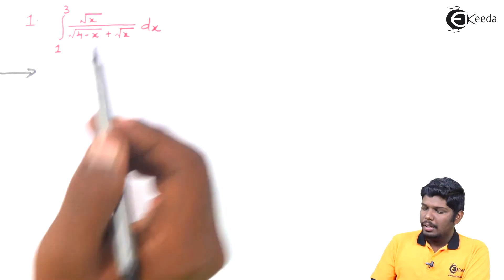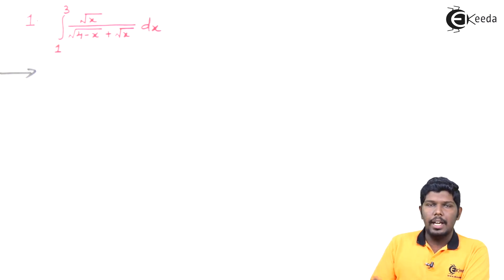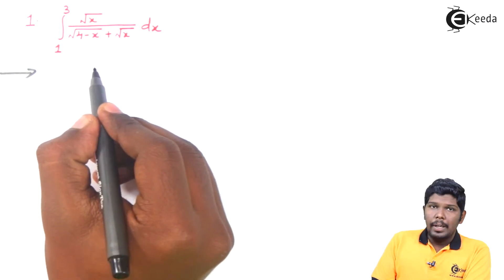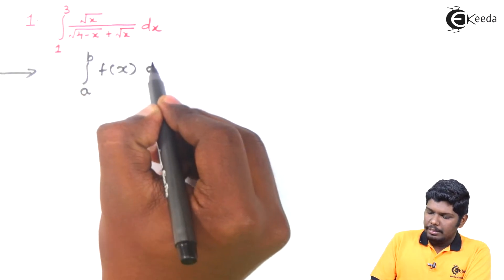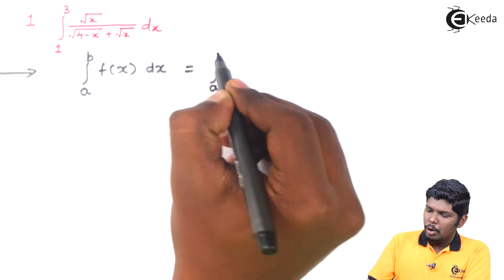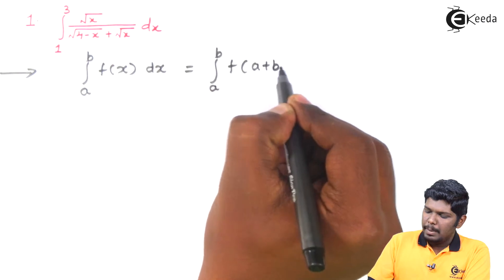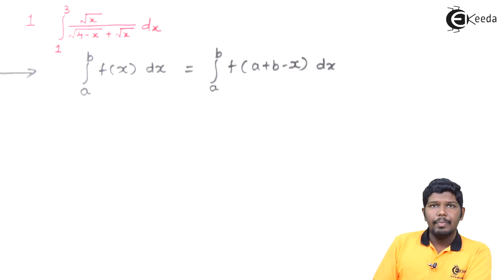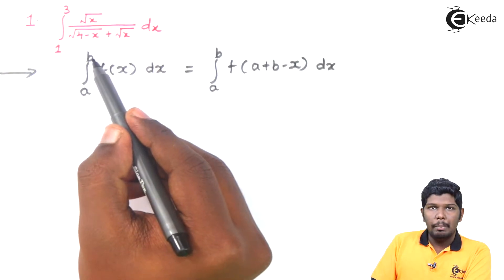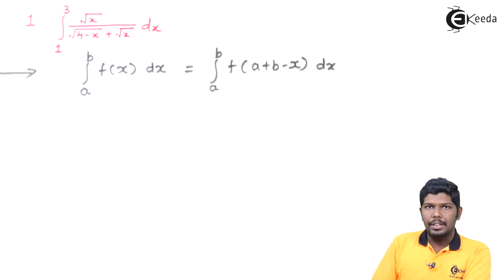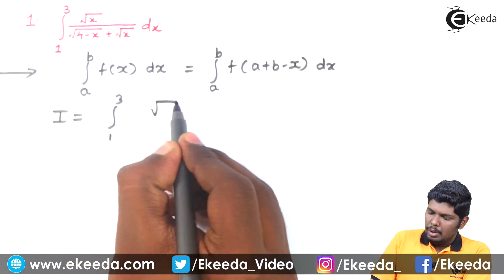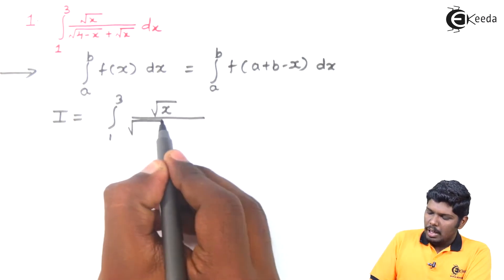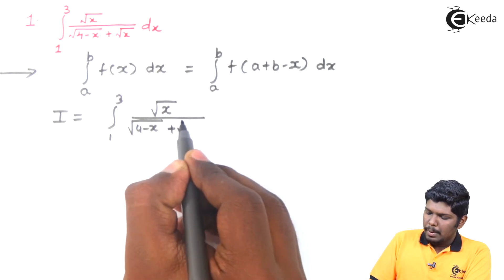The integral is from 1 to 3 of root x over (under root (4 minus x) plus root x) dx. Now, which property are we going to use in this problem? The property we are going to use is: integral a to b of f(x) dx can be written as integral a to b of f(a plus b minus x) dx. We will consider the given integral as i, that is integral 1 to 3 of root x over (under root (4 minus x) plus under root x) dx.